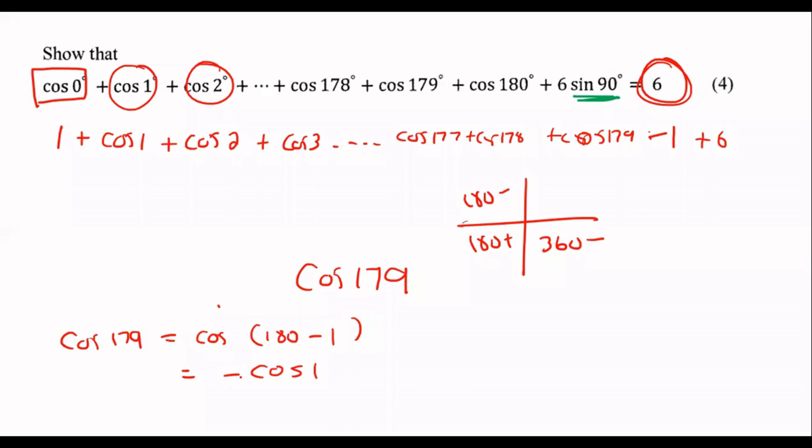So now we have 1 plus cos 1 plus cos 2 plus cos 3. Cos 177 can you guys agree with me that cos of 177 would just become negative cos 3, cos 178 would become negative cos 2.